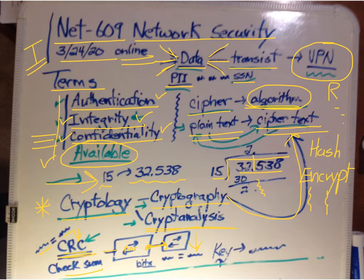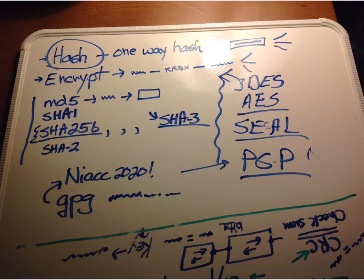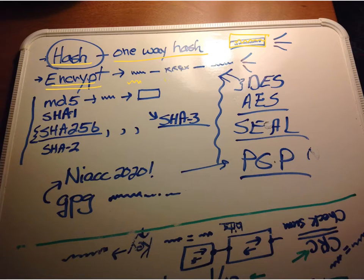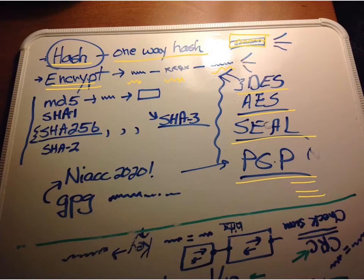We've got to talk about keys that have to do with our algorithm. We talked about hashing and encryption — a one-way hash. You can use an MD5 hash, and a hash always ends up being a specific fixed size. We talked about encrypting data: take plain text, encrypt it, and decrypt it. Encryption algorithms include Triple DES, Advanced Encryption Standard (AES), SEAL, and Pretty Good Privacy. We have different algorithms for encryption and different algorithms for hashing.